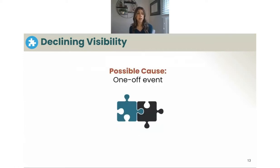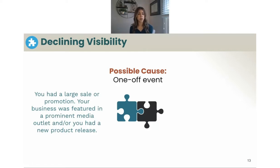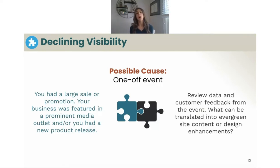The next possible cause of declining visibility is a one-off event. This happens especially with e-commerce brands where you had a large sale, a promotion, your business was featured on TV or in a prominent media outlet, or you had a new product release. All of those things tend to prompt spikes in traffic and sales. These don't happen all the time. What can you do to capitalize on this? Look at the customer data and feedback from the event — is there anything you can translate into evergreen content or experience enhancements on the site?